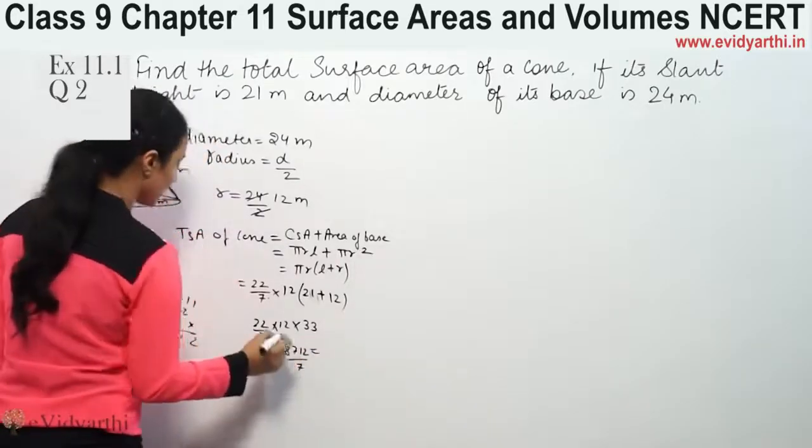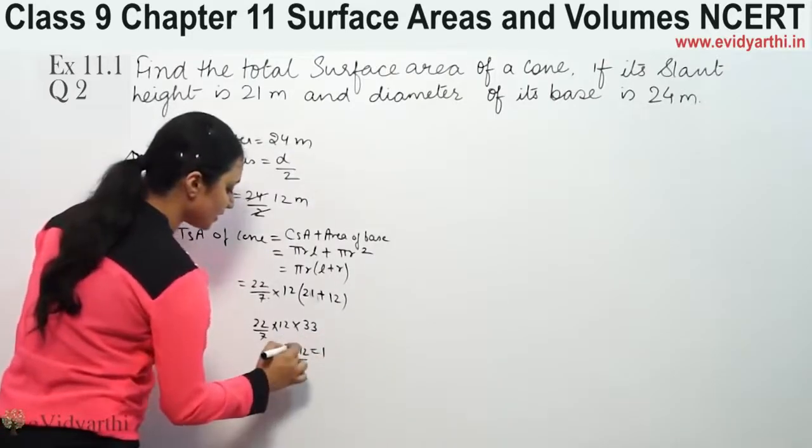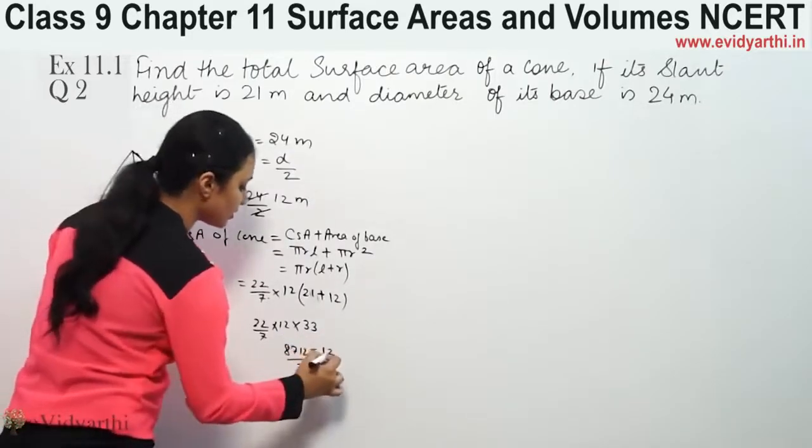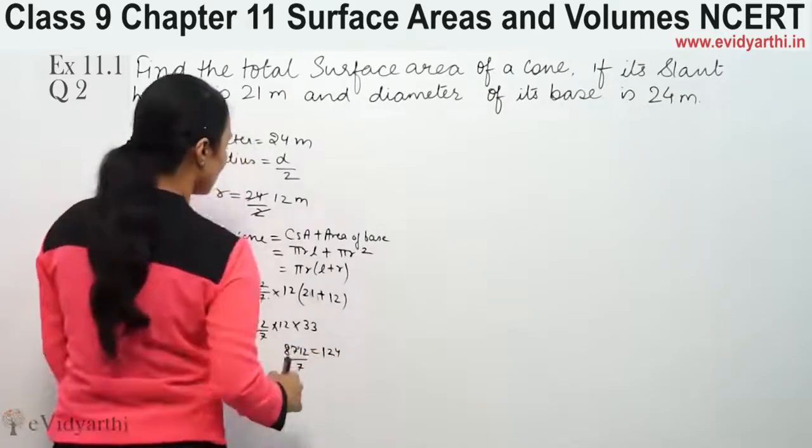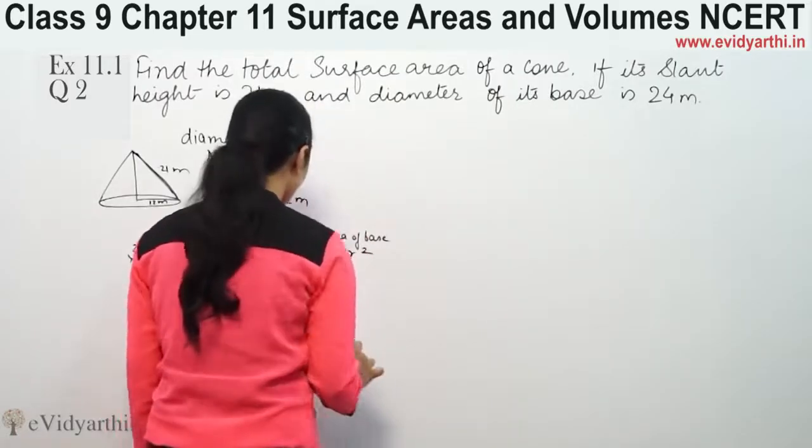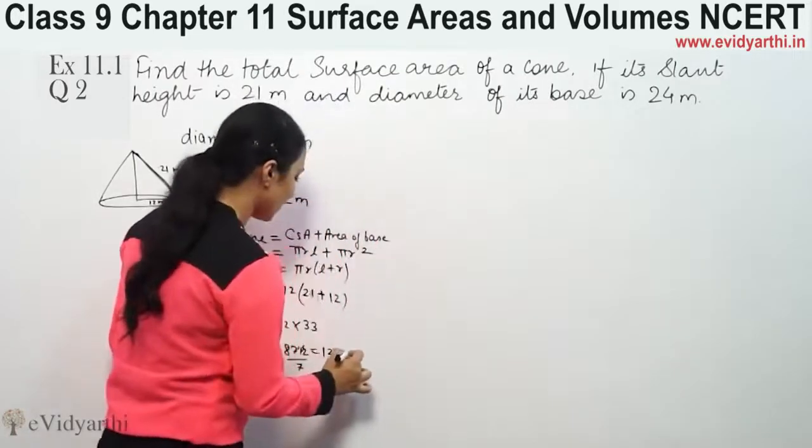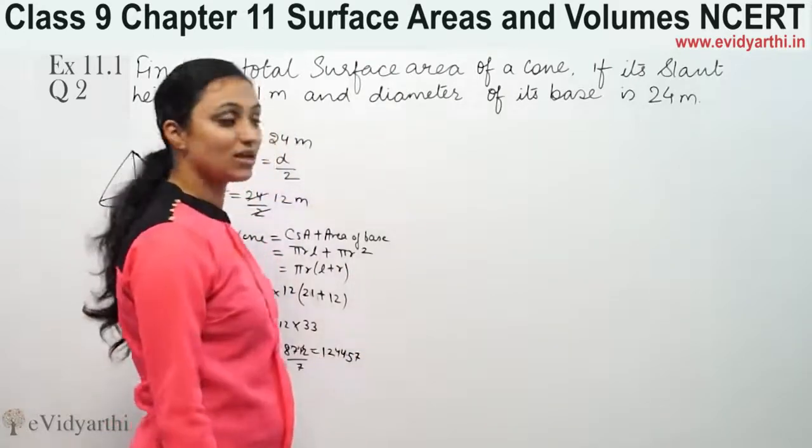8712 divided by 7. 7 ones are 7, 17 divided by 7 is... 7 fours are 28, then 32, and again 7 fours are 28... This gives 1244.57.